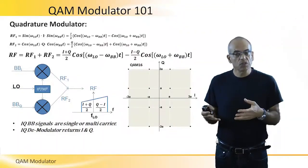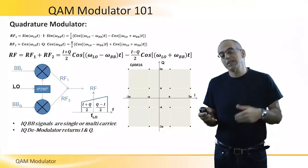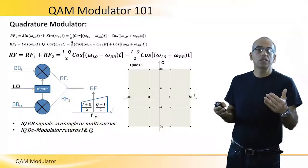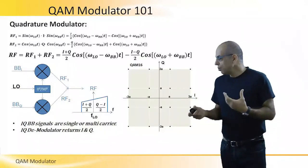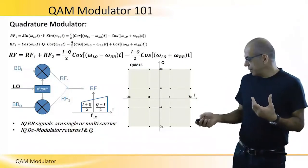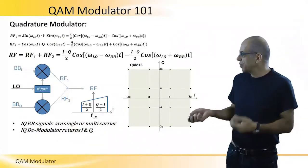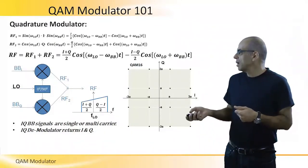We multiply the I with the cosine and the Q with a sine, and so we need to create the 0 and 90 degree to represent the sine and the cosine on the LO.